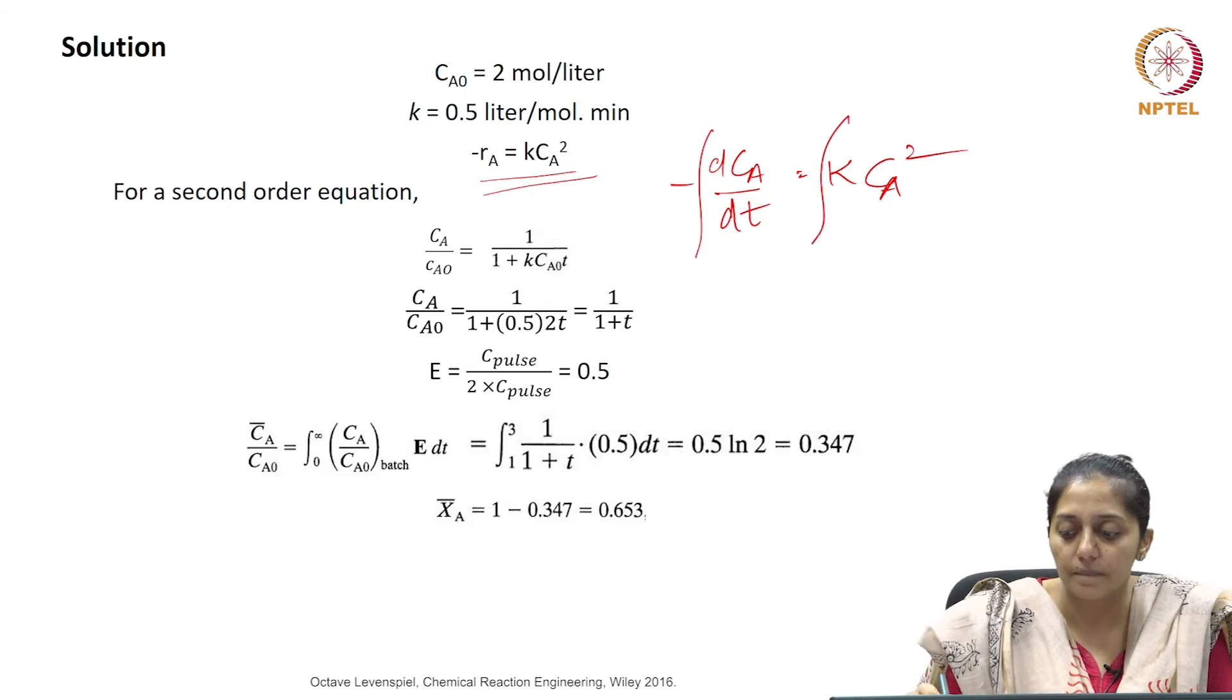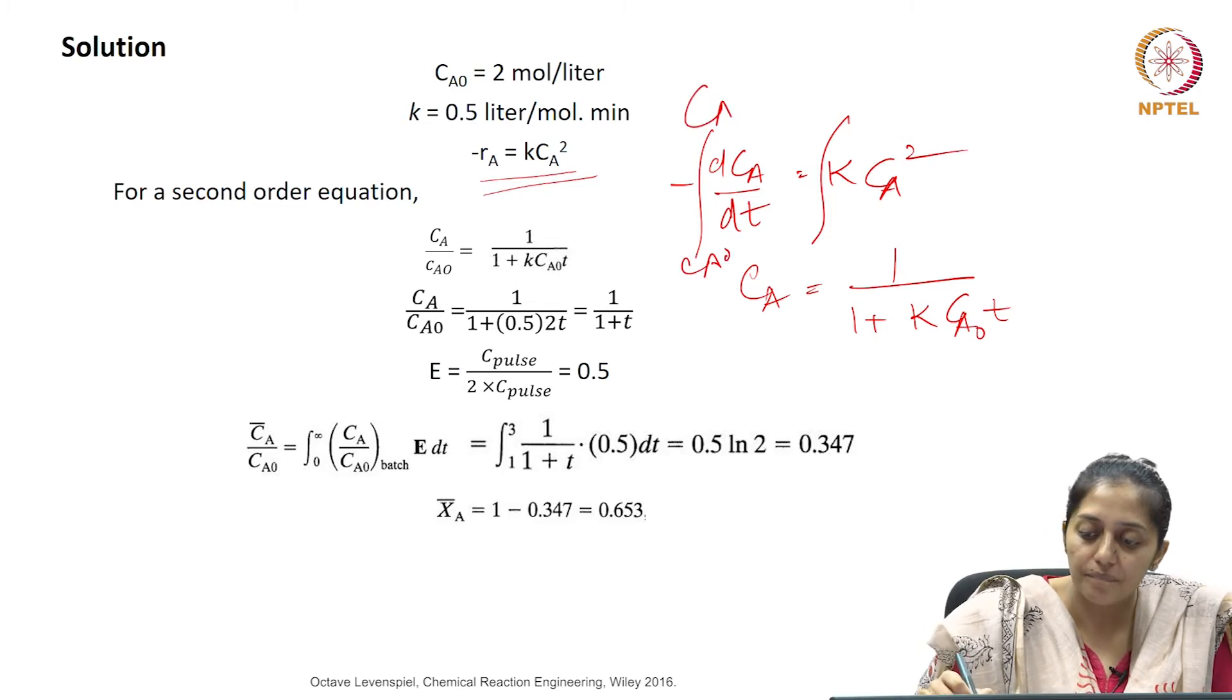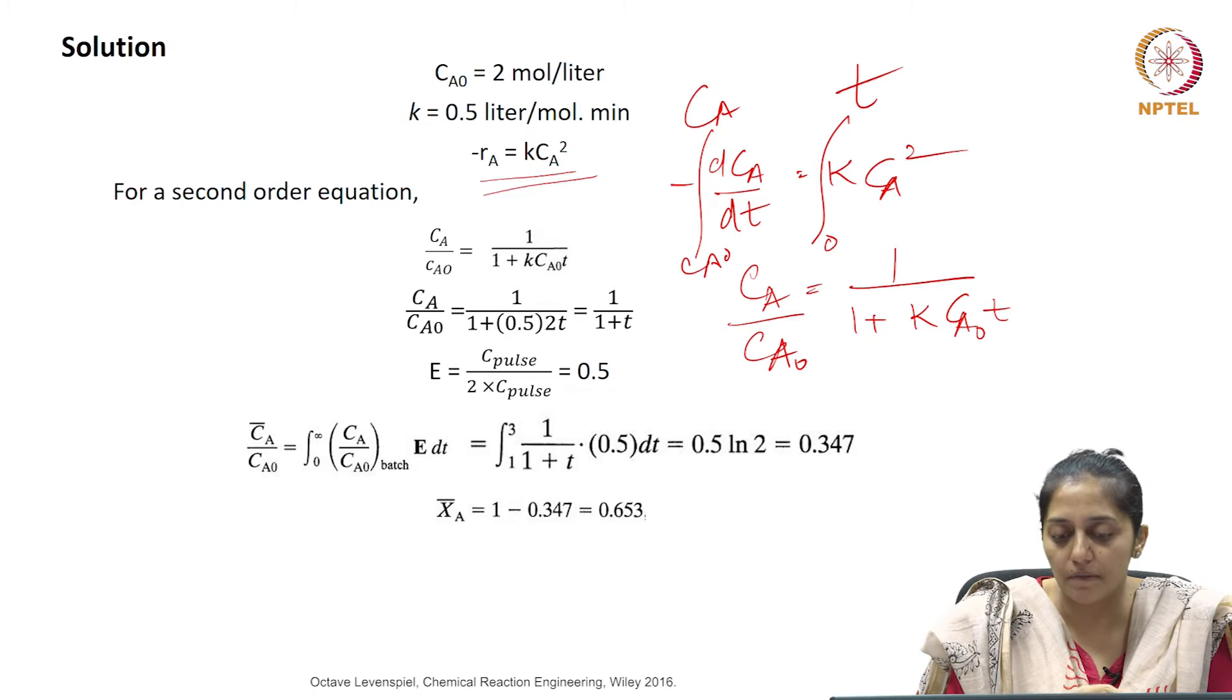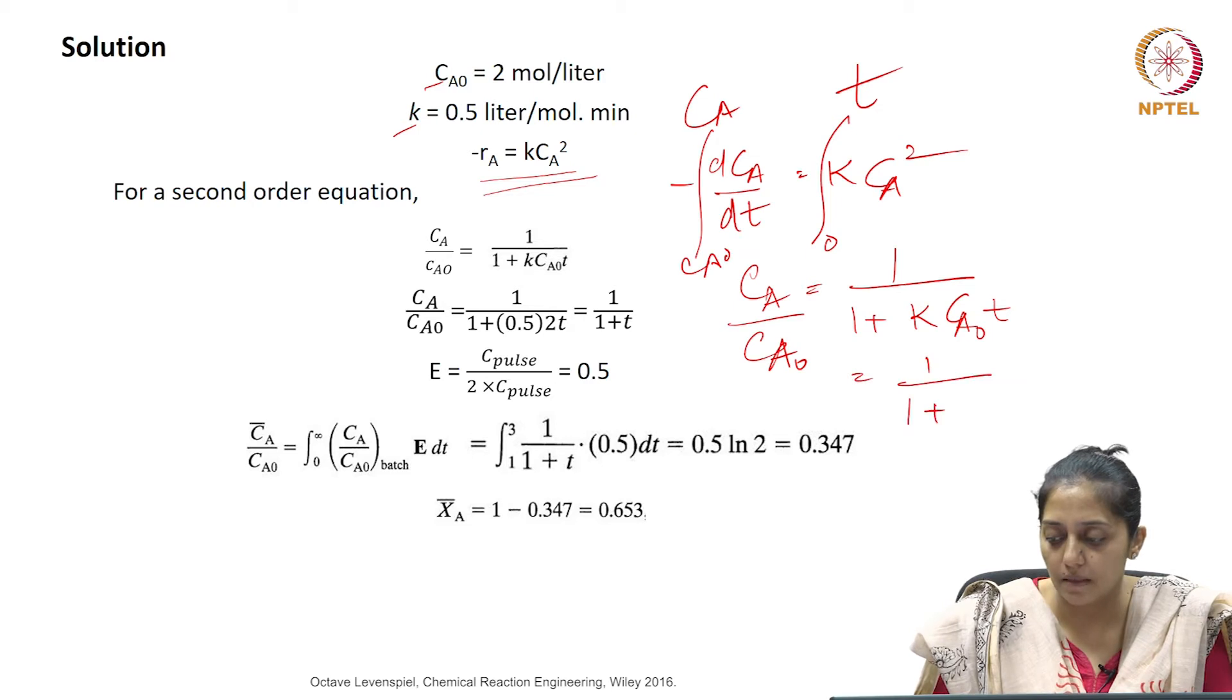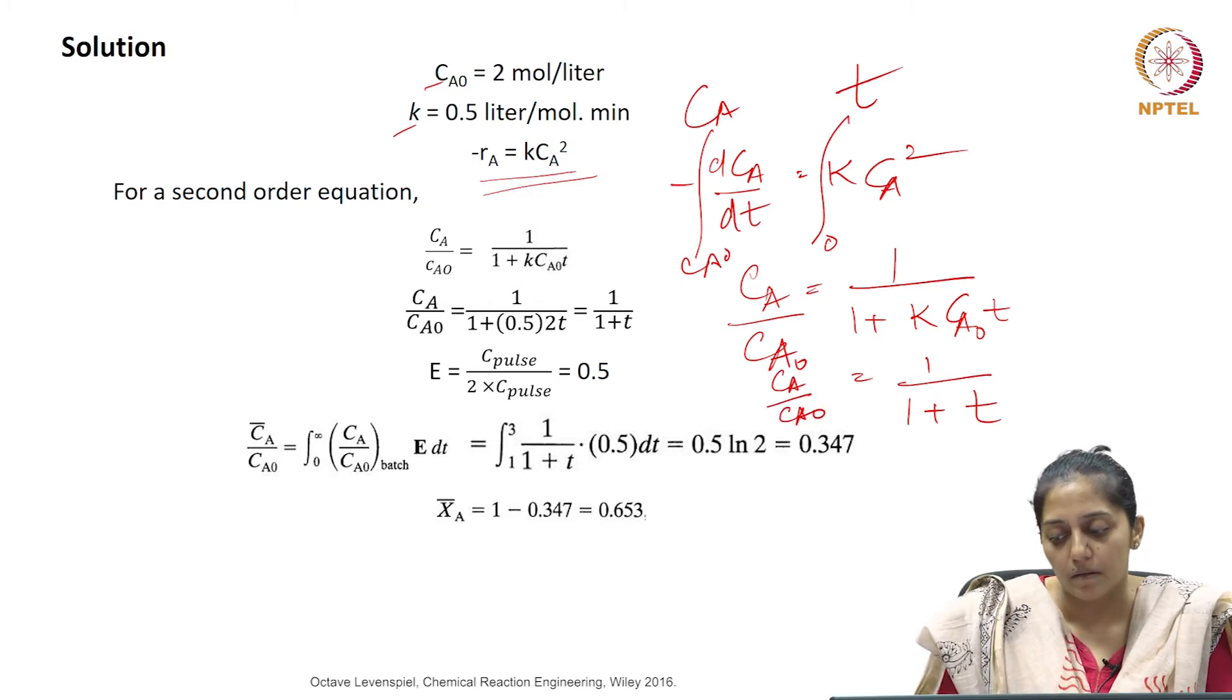We can integrate this to see how Ca changes with time. If we integrate this putting the limits of Ca naught to Ca between 0 to t, then we will get Ca by Ca naught. If we substitute the values Ca naught and k given here, it will become 1 by 1 plus t.